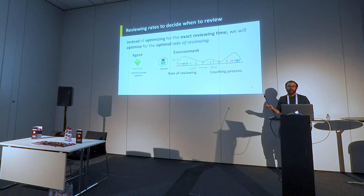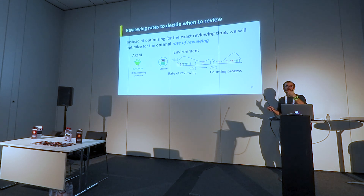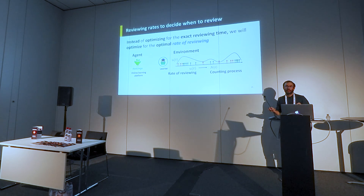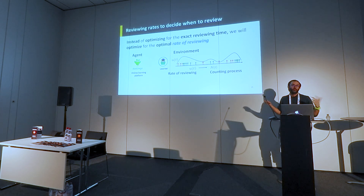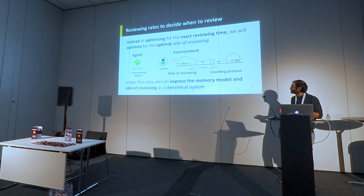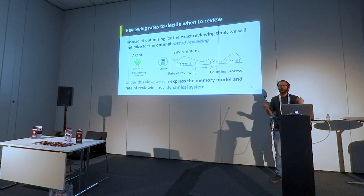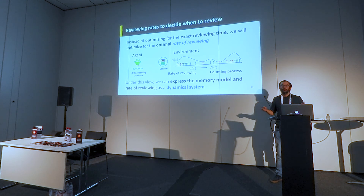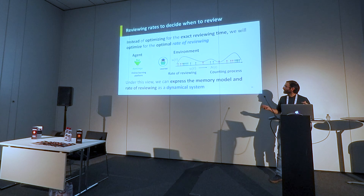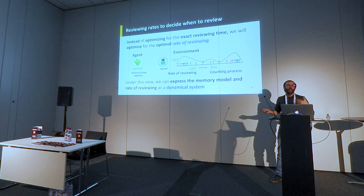The intuition of our work is: when thinking about how frequently you should show a person an item for review, you can think in terms of a reviewing rate — say, showing a word three times per week. The idea is that you want this reviewing rate to change over time adaptively, depending on how well the learner is recalling the word. This naturally maps to the framework of dynamical systems, modeling the reviewing and forgetting activity of a human as a dynamical system.